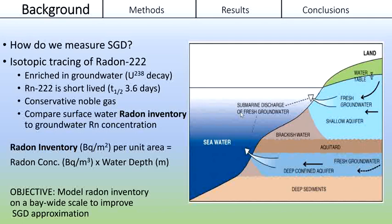To trace groundwater discharge to Baffin, we use radon-222, which is a noble gas that gets generated in terrestrial sediments by uranium decay. Radon has a short half-life, so it represents younger groundwater, and the ratio of radon in surface water to groundwater can be used to estimate a discharge rate.